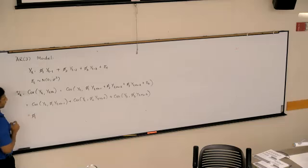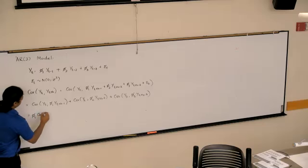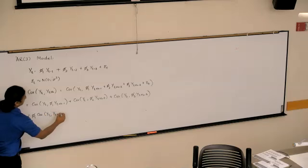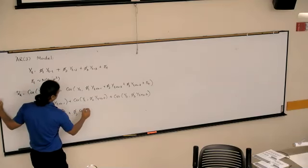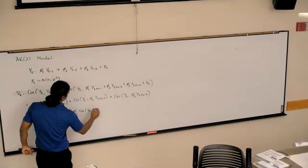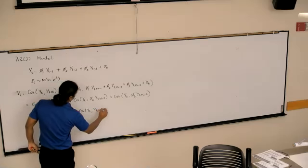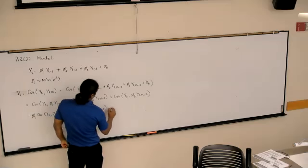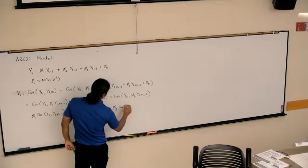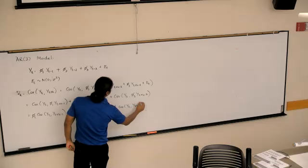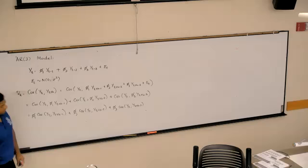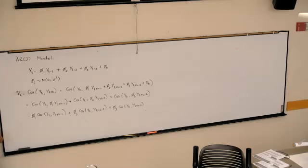So we will have phi 1, covariance of YT comma YT plus H minus 1, plus phi 2, covariance of YT comma YT plus H minus 2, plus phi 3, covariance of YT comma YT plus H minus 3.